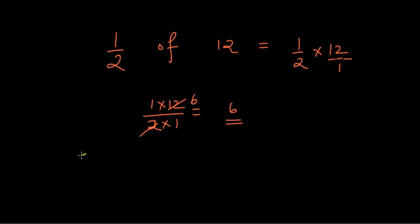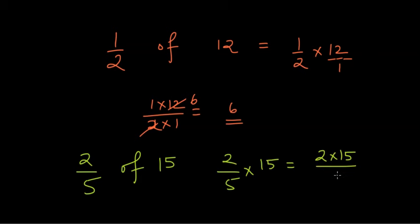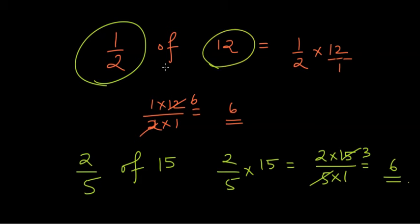What if we wanted to find 2/5 of 15? This is again 2/5 times 15. That gives me 2 times 15 divided by 5 times 1, which gives me 6. And this is how, whenever we have a fraction of some whole number, we can change this 'of' into multiplication.